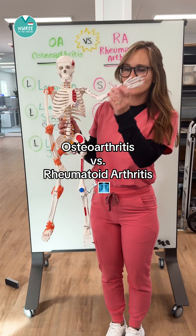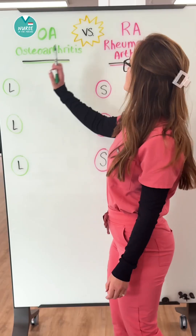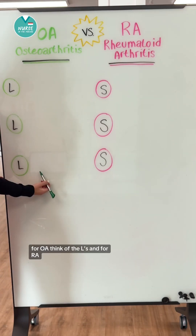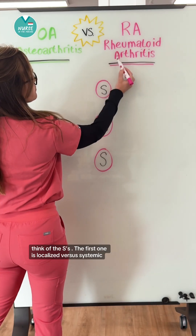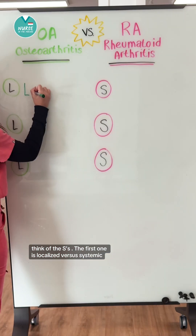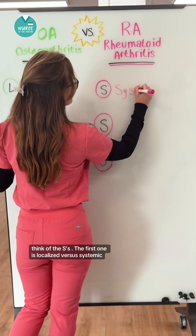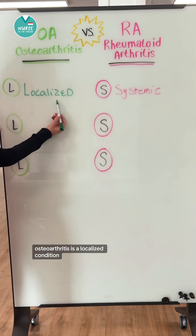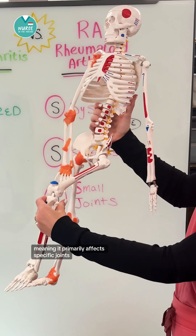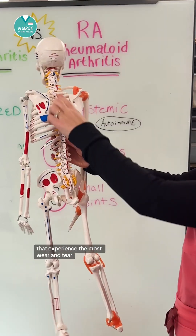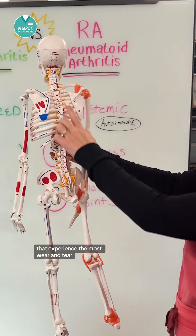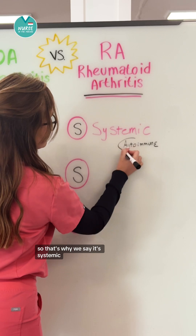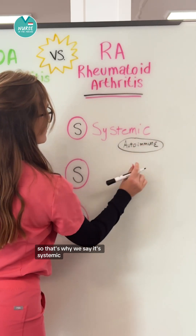Let's talk about osteoarthritis versus rheumatoid arthritis. For OA, think of the L's, and for RA, think of the S's. The first one is localized versus systemic. Osteoarthritis is a localized condition, meaning it primarily affects specific joints that experience the most wear and tear, where RA is an autoimmune disease, so that's why we say it's systemic.